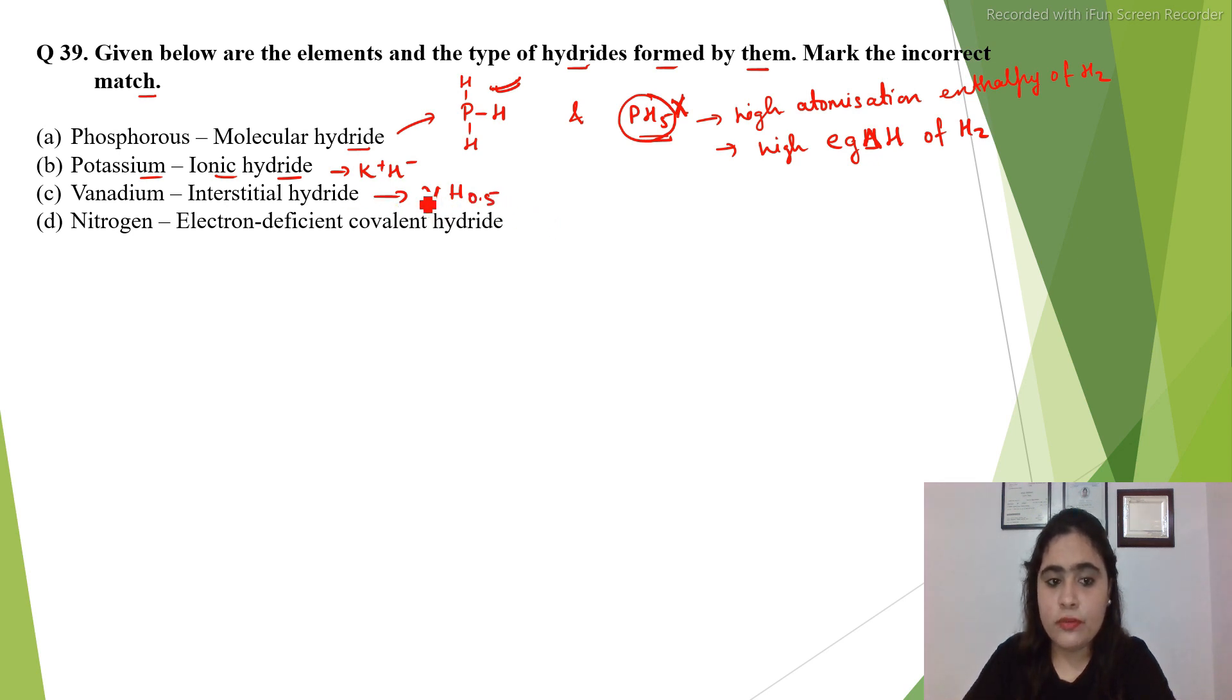Direct hydrides are not formed from the d-block elements. They form interstitial hydrides because hydrogen is present at the interstitial sites. It disobeys the law of constant proportion.